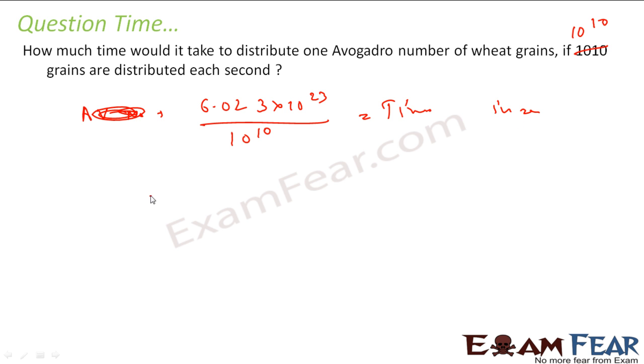And if you want to find in years, what you can do is, you can divide this by 60. This becomes minutes. This becomes hours. 24 hours. And 365. This thing will be in years. This is in seconds. So if you solve this, this is 1.909 into 10 to the power 6 years. Huge year.